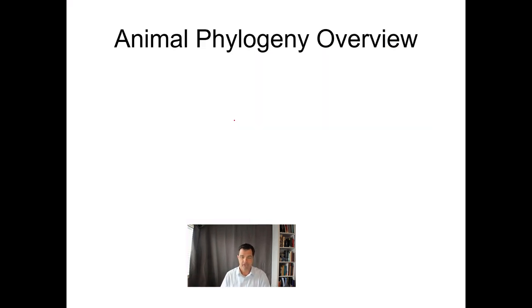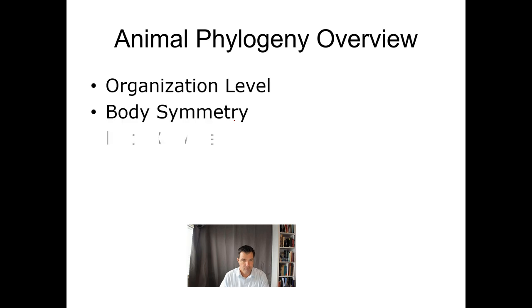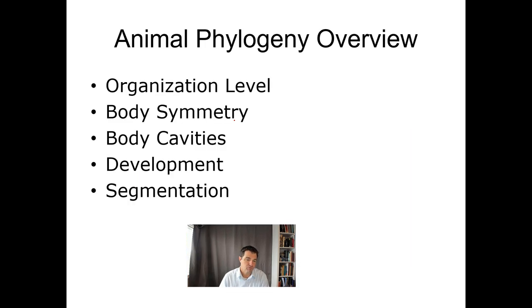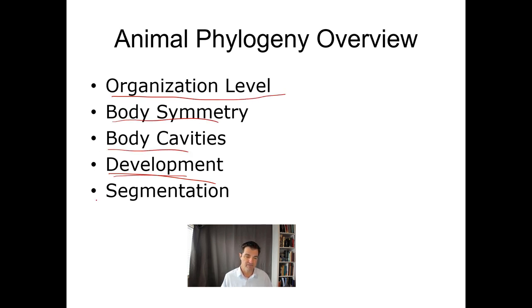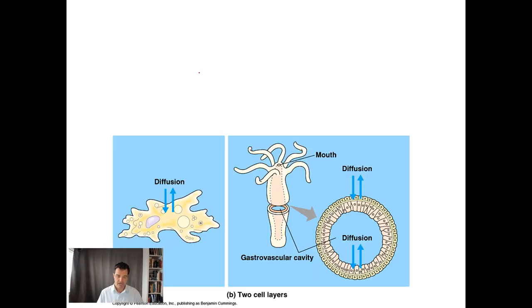Now that we have that early stage of development, the different animal groups are defined based on several characteristics: organization level, body symmetry, body cavity development, and segmentation. We're going to walk through each one of those as we go.